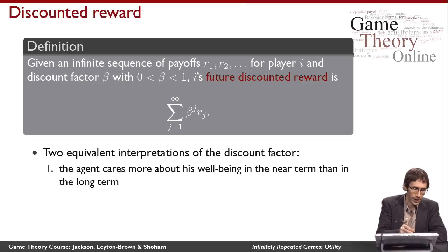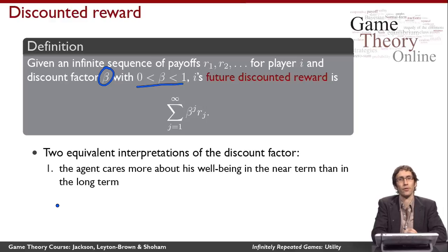So my discount factor beta is some value strictly between zero and one. And you can sort of think of it like an interest rate. It's saying, you know, with money, if I wanted to tell somebody that I'm going to pay them $100 in a year, they would value that at less than $100 today.